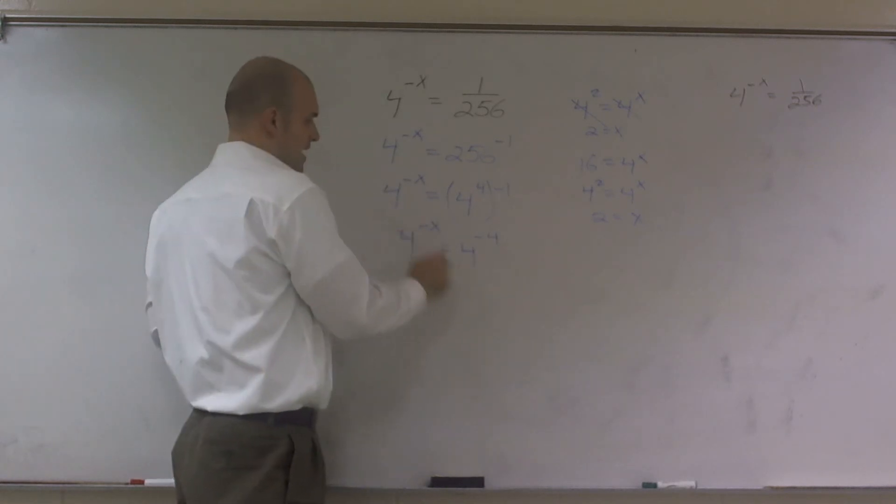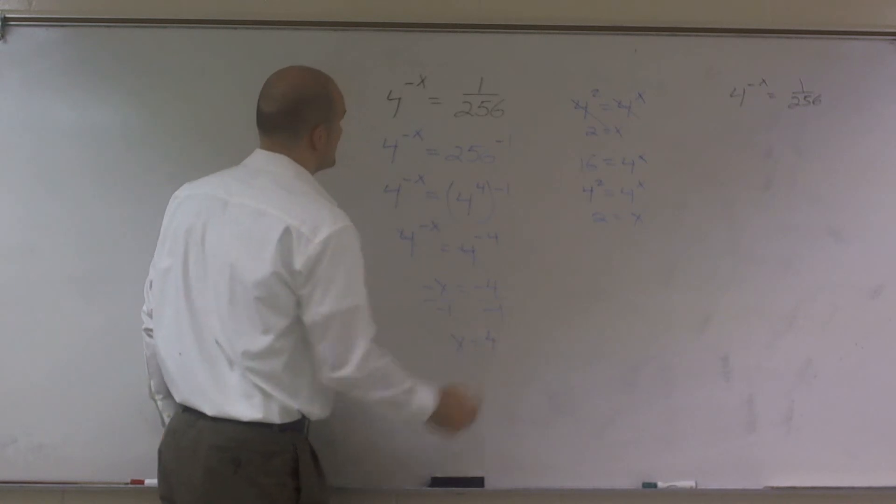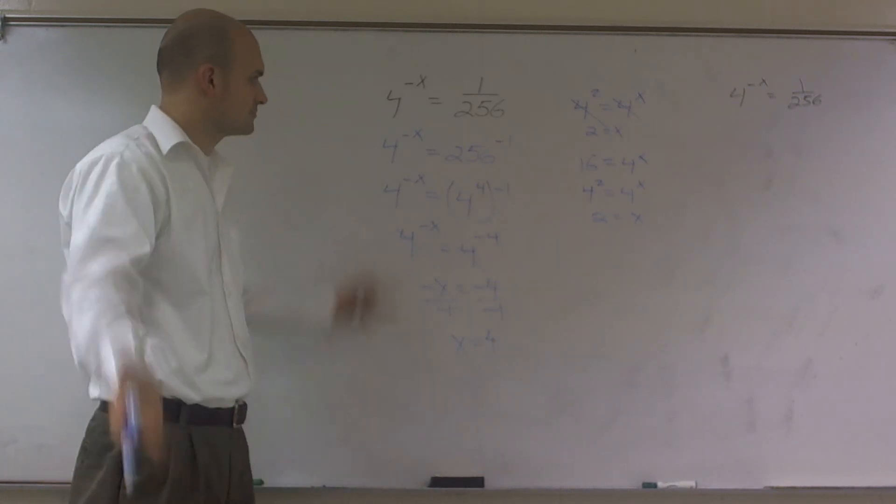Now I have my one-to-one property, cancel out, negative x equals a negative 4. Then what I'll do is divide by negative 1, and I get x equals a positive 4. And that's how you solve it.